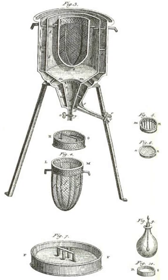A bomb calorimeter is a type of constant volume calorimeter used in measuring the heat of combustion of a particular reaction. Bomb calorimeters have to withstand the large pressure within the calorimeter as the reaction is being measured. Electrical energy is used to ignite the fuel; as the fuel is burning, it will heat up the surrounding air, which expands and escapes through a tube that leads the air out of the calorimeter. When the air is escaping through the copper tube it will also heat up the water outside the tube.